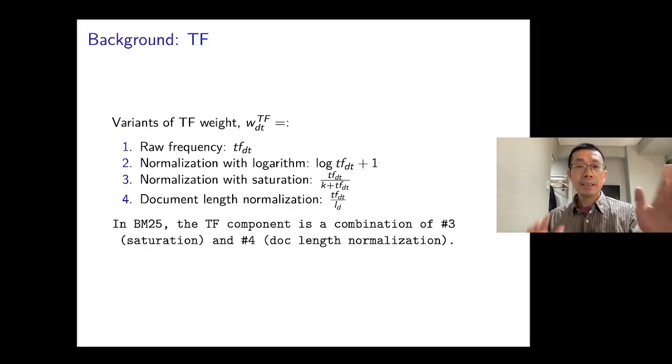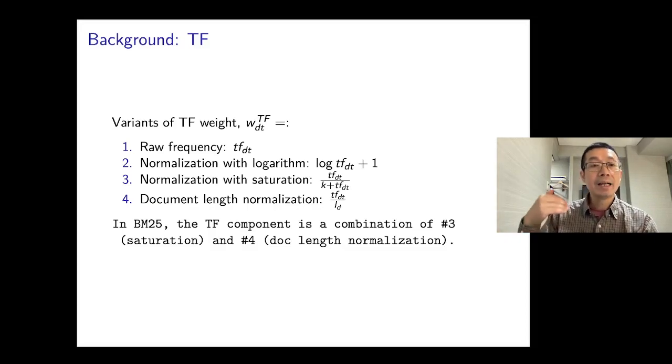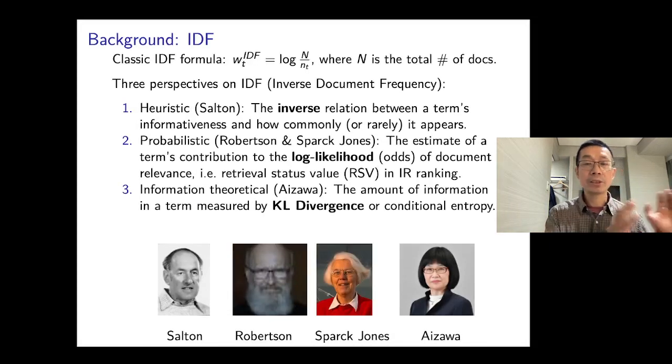On the first part of the TF or term frequency weight, there are different variants. In one way, you can just simply use the raw frequency, the raw counts, or you can normalize the count with logarithm. The other normalization that is common is a saturation function to normalize it between 0 and 1. And then there is also a very common treatment of using document length normalization so that you do not give longer documents automatically the advantage over shorter documents. In BM25, the TF component is a combination of the saturation function and document length normalization.